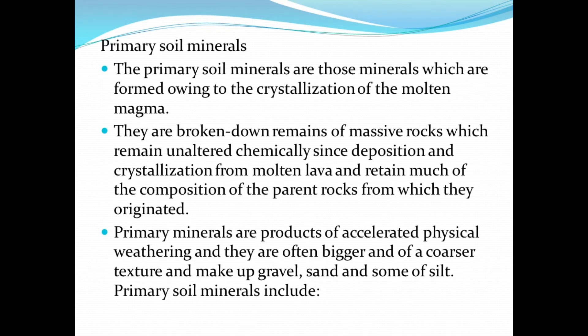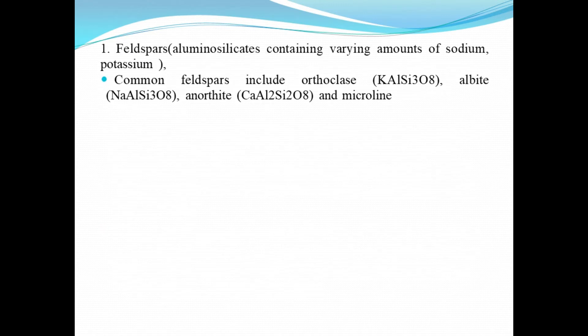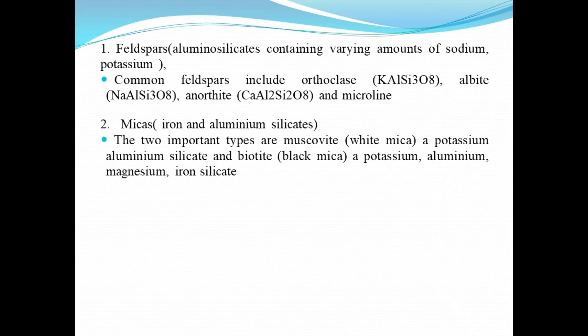Let's take a look at examples of primary soil minerals. We have the feldspars — they are aluminosilicates containing various amounts of sodium and potassium, and common feldspars include orthoclase, albite, anorthite, and microcline. The second type of primary mineral is the micas, which include iron and aluminum silicates. The two most important types are muscovite, which is a white mica and potassium aluminum silicate, and biotite, which is a black mica — a potassium aluminum magnesium and iron silicate.